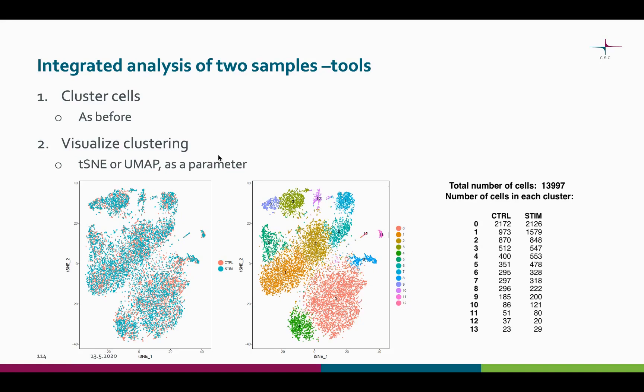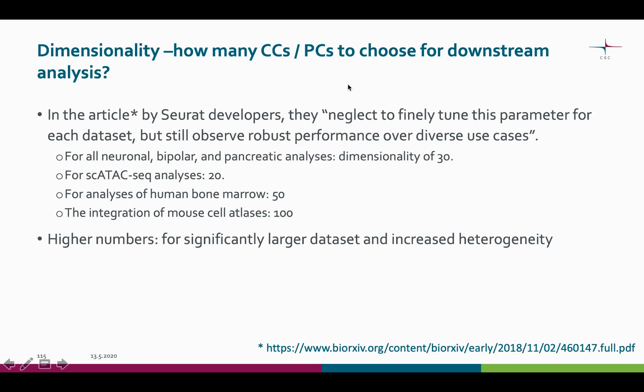You can check the video about clustering to remind yourself about the different parameters. One of the parameters is for the number of principal components to include in the clustering step. This might feel like yet another layer of dimension reduction, as PCA and CCA were already used in the integration of the datasets, and t-SNE and UMAP will be used for the visualization of the clustering results. That feeling is justified, but this is just the normal true dimensionality estimation that we learned in the one-sample analysis pipeline. In the one-sample pipeline, we used the heat maps and the elbow plot to estimate the number of meaningful principal components.